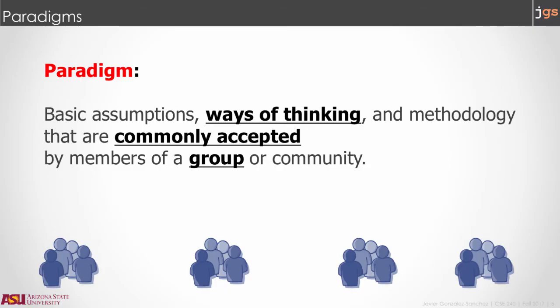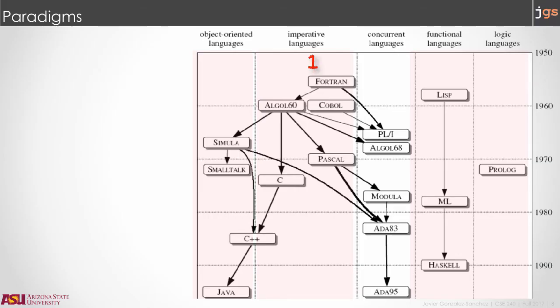Languages with the same features or characteristics belong to the same paradigm. By definition, a paradigm is a set of assumptions, a way of thinking, or a methodology commonly accepted by members of a group or community. There are several paradigms of programming languages, but there are four that are the most important. In chronological order, imperative languages, object-oriented languages, functional languages, and logic languages.